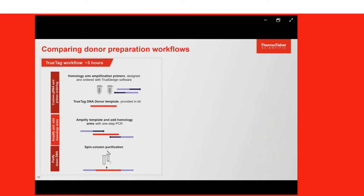The basics of creating the DNA template for knock-in using the TrueTag kits is straightforward. Primers containing unique homology arms to your genomic site can be designed and ordered from the TrueDesign software, then used to amplify the DNA donor template provided in the kit using PCR reagents also provided. Following PCR, that donor DNA will have the locus-specific homology arms added to it, and it's simply purified with a provided spin column. All of this can be done in just a few hours, giving you a transfection-ready DNA donor.